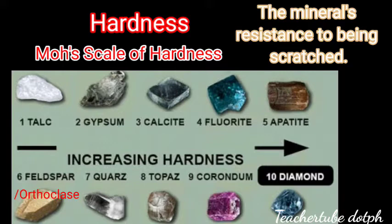Here is the Mohs scale of hardness: 1 — talc, 2 — gypsum, 3 — calcite, 4 — fluorite, 5 — apatite, 6 — orthoclase, 7 — quartz, 8 — topaz, 9 — corundum, and 10 — diamond.